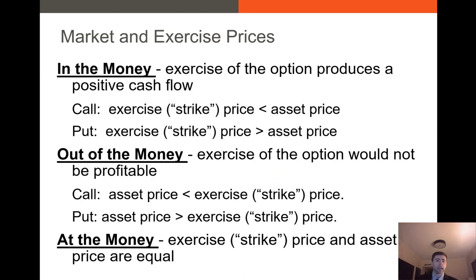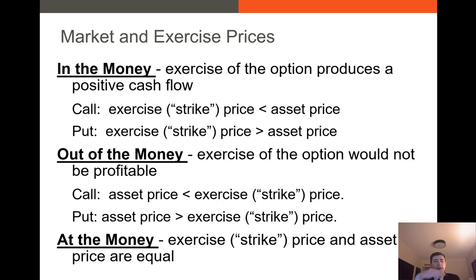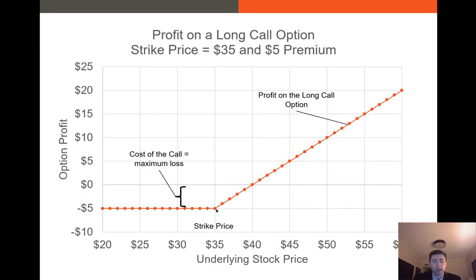I mentioned the terms in the money, at the money, and out of the money. These tell us whether or not the option is paying off. In the money for a call option means the underlying asset value is greater than the strike price — so you'd want to exercise. Out of the money means you'd never want to exercise; for a call, it means the asset price is less than the strike price. At the money is the case where the strike price and the asset price are equal.